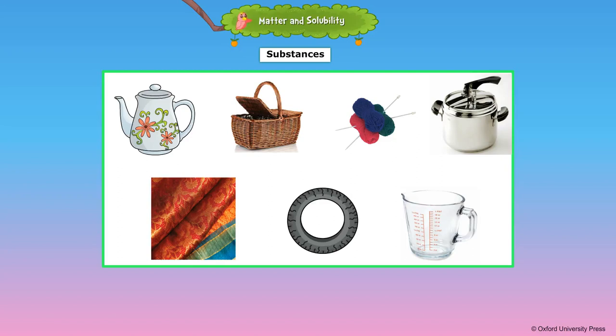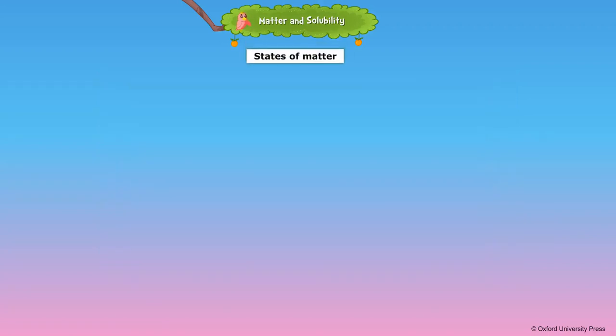Rubber is an elastic substance made from the thick juice of a tree. A car tire is made of rubber. Anything that has weight or mass and occupies space is called matter. Matter can have many properties.